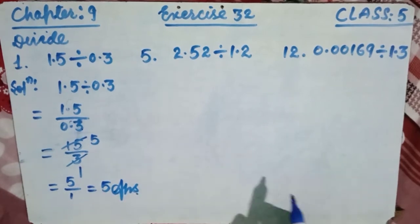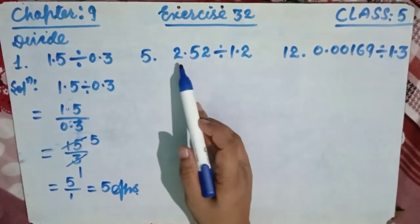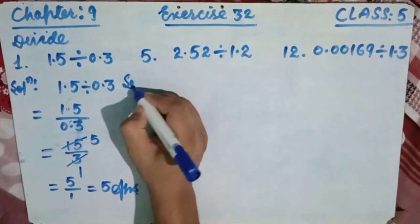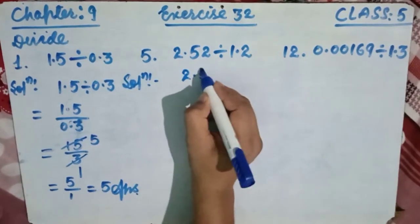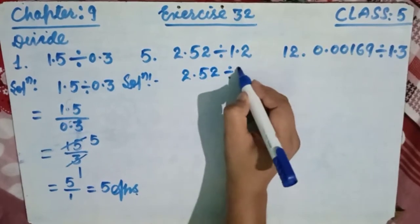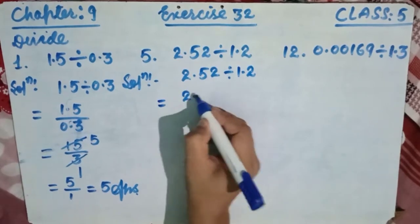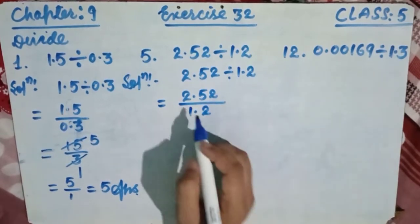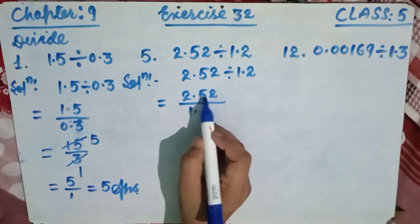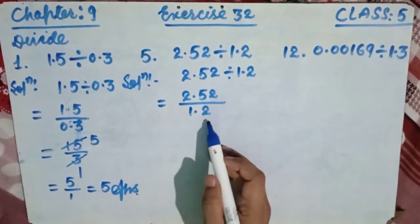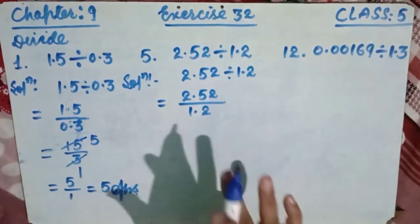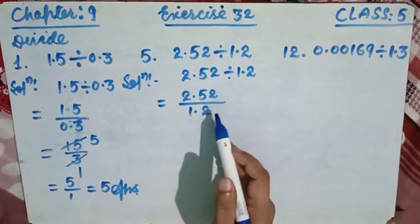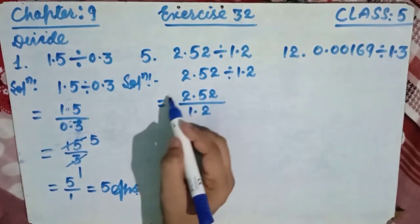Now come to question number 5: 2.52 divided by 1.2. Write it as a fraction: 2.52 over 1.2. Here the number of digits after the decimal in the numerator is 2, and in the denominator is 1. Since these are not the same, we cannot directly cancel or remove the decimals.